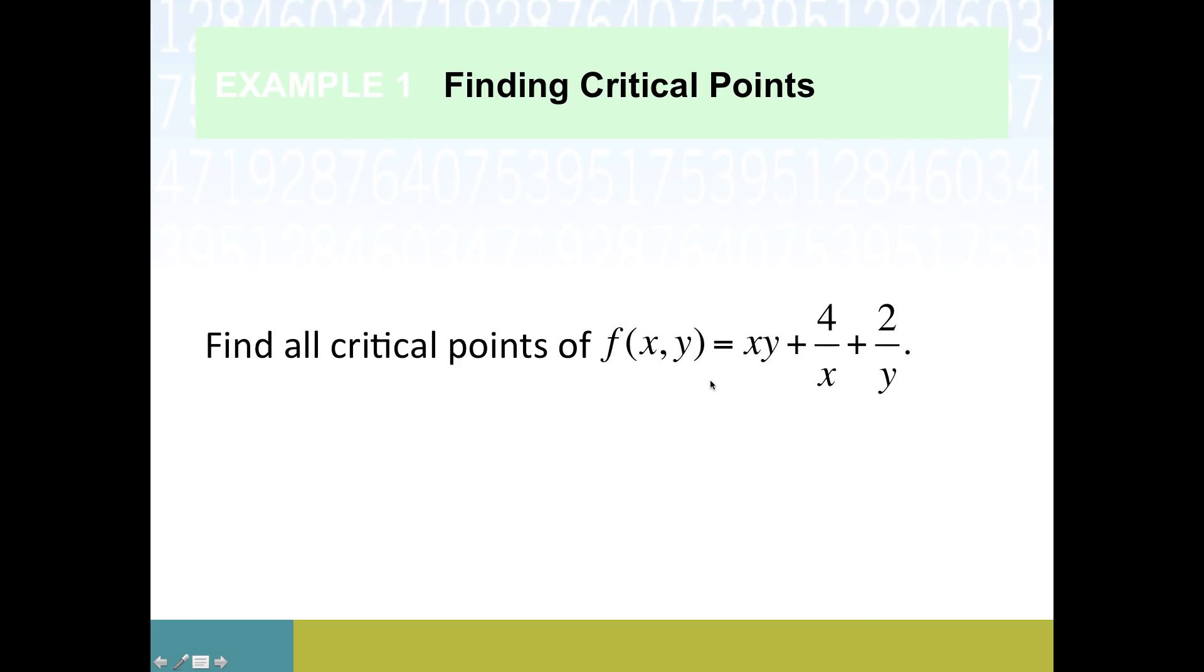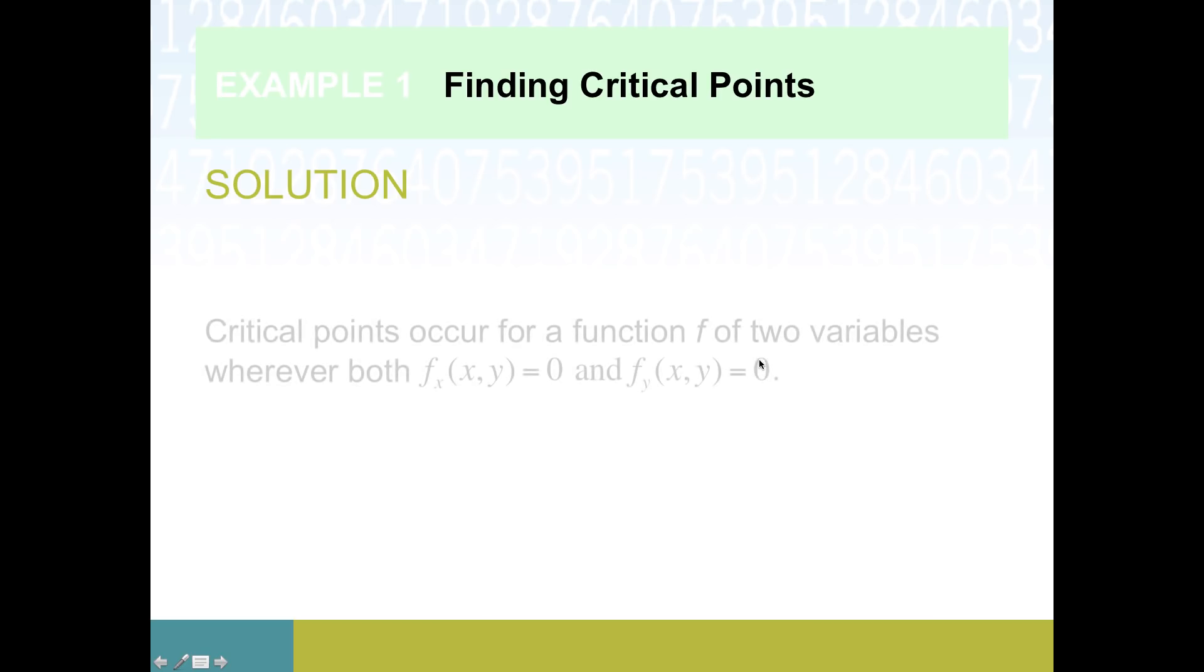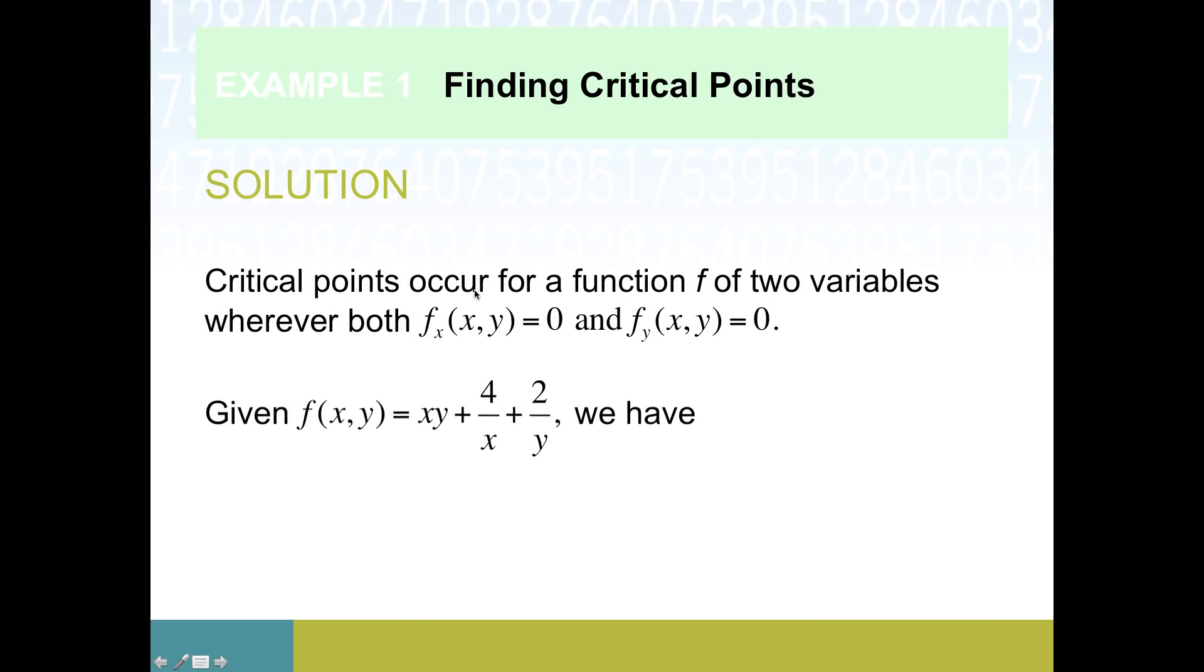Let's get practice just finding critical points with a random function. Here's our function: xy plus 4 over x plus 2 over y. Our strategy is based off of this definition. It says critical points happen where f sub x is zero and where f sub y is zero.